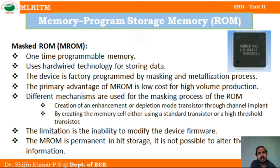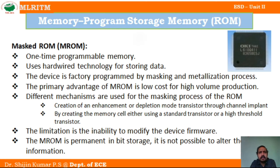Different mechanisms are used for developing Masked ROM. One is the creation of enhancement or depletion mode transistors through channel implant technology. Another is by creating the memory cell either using a standard transistor or a high threshold transistor. These are the two types of technologies used to develop Masked ROM.